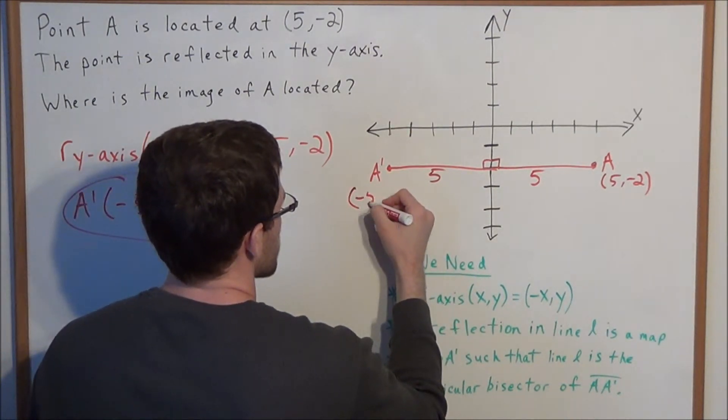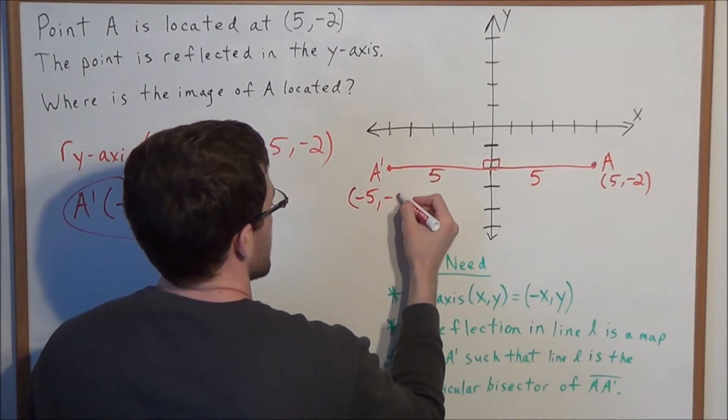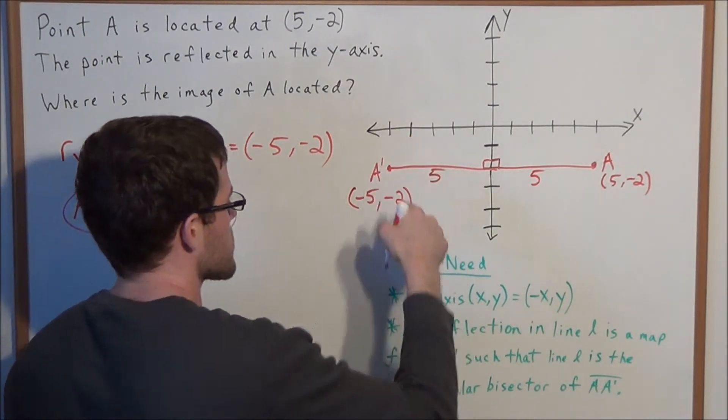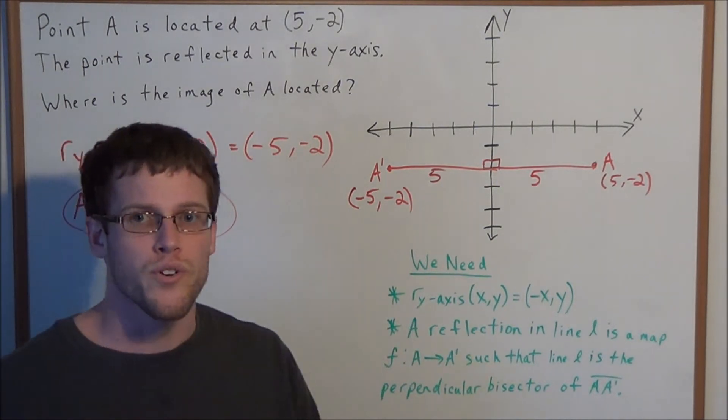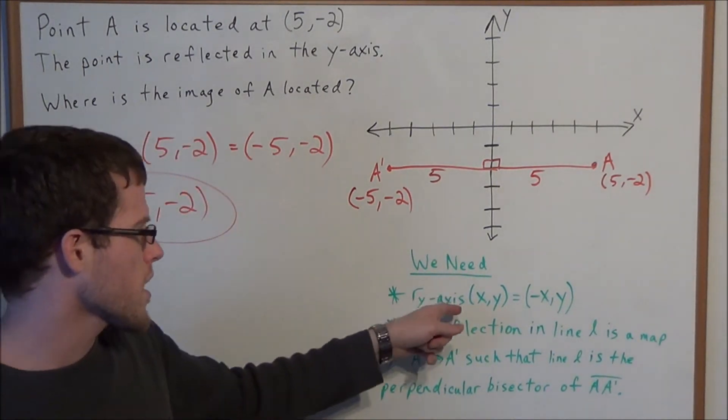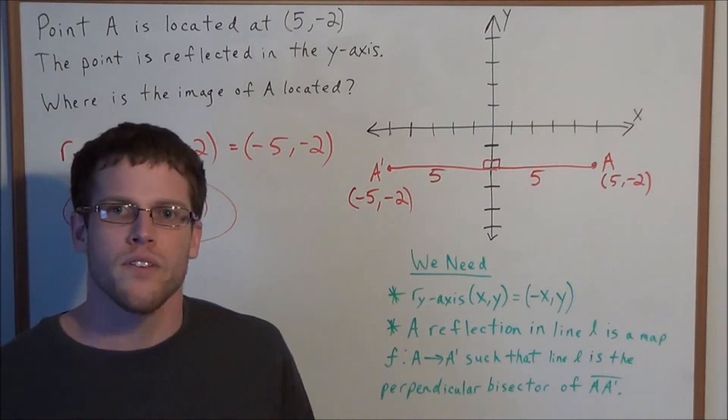So if we're going 5 units to the left, we're going to negative 5, negative 2, since we're also going 2 units down. So this is another way to find the coordinates of A prime if we forget the equation for a reflection in the y-axis.